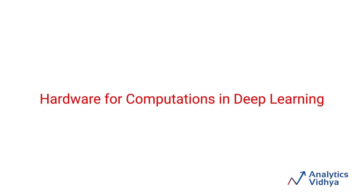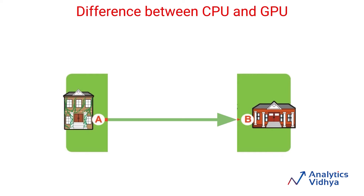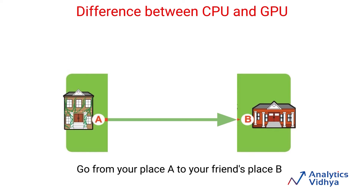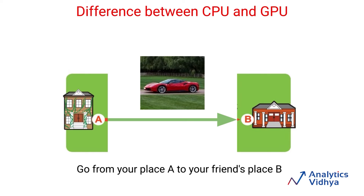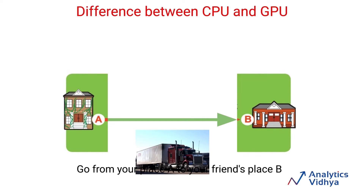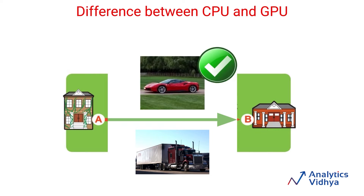In order to do that, let me start with a very simple analogy. Let us say you want to go from place A, which is your home, to place B, which is your friend's place. And you have two options: you can either use your Ferrari, which happens to be your favorite car, or you can use the freight truck. Now your friend lives only a few miles away, so which mode of transport would you choose? In all likelihood, you would choose the Ferrari — you will reach your friend's place fast and efficiently.